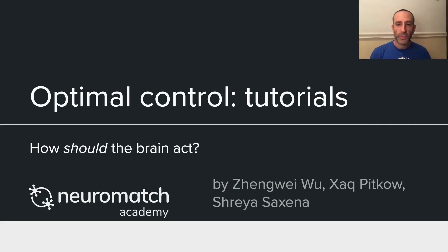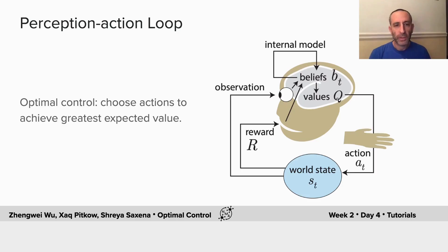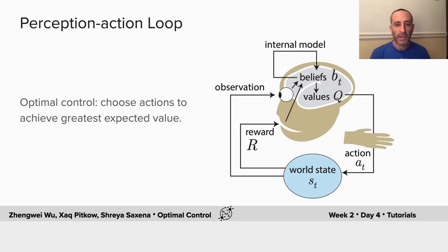Welcome to your Optimal Control tutorials. The question that we'll answer today is: how should the brain act? We'll talk about the perception-action loop, where an observer gets to make measurements of the world and take actions accordingly in such a way as to maximize their expected value. This involves having an internal model of how the dynamics of the world work and what is valuable for the agent.